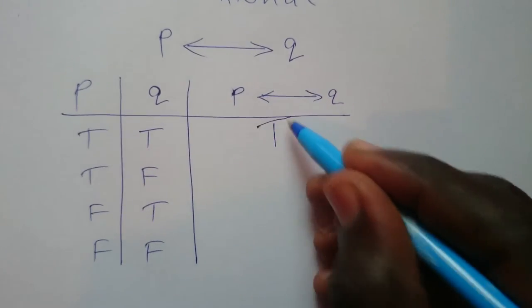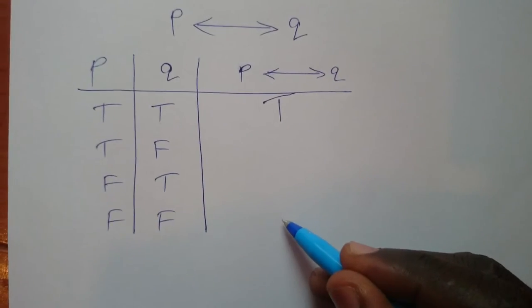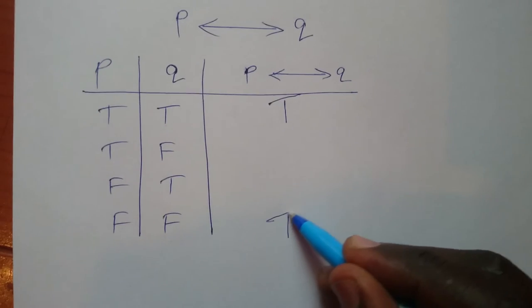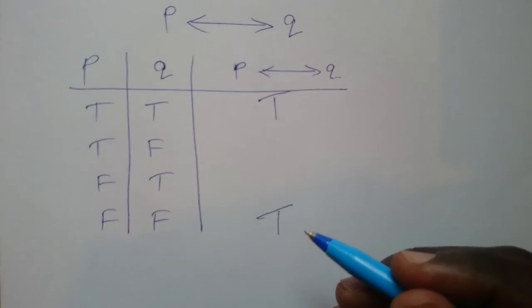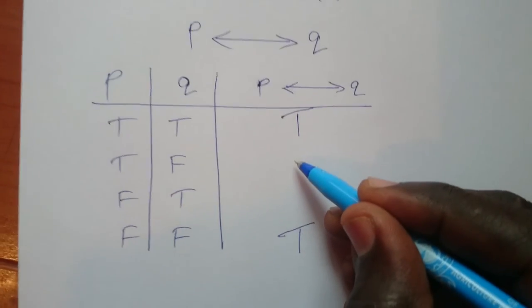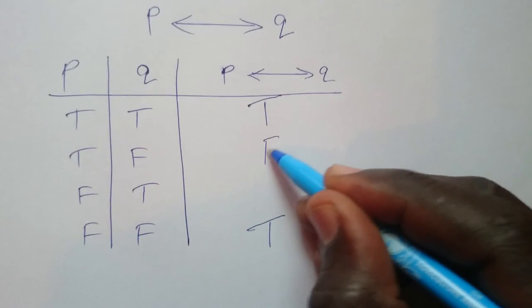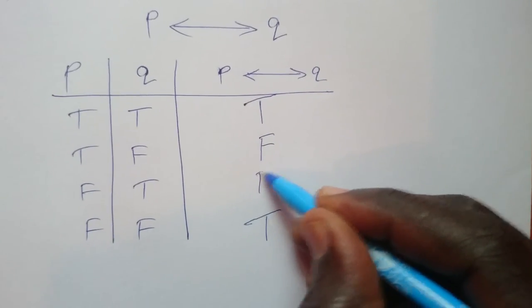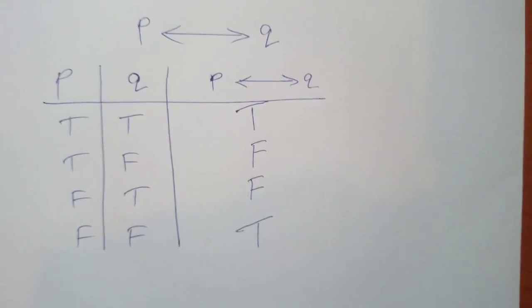The fourth case, it's true because they have the same truth value which is false. And then the second and third case, both false. Why? Because the truth values are different.